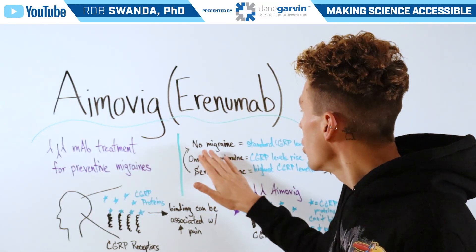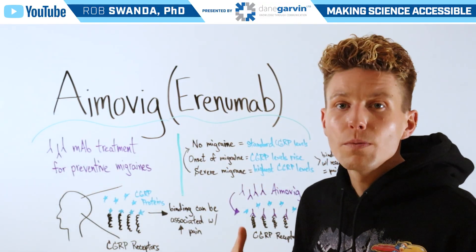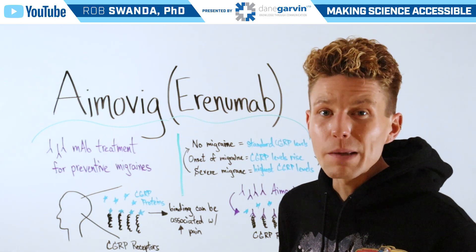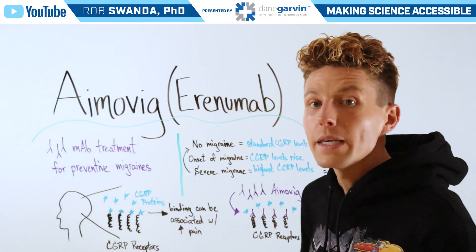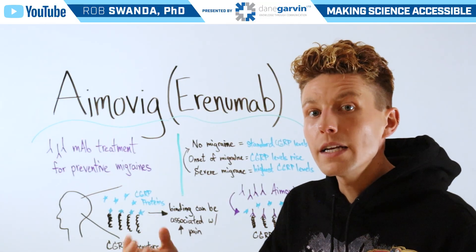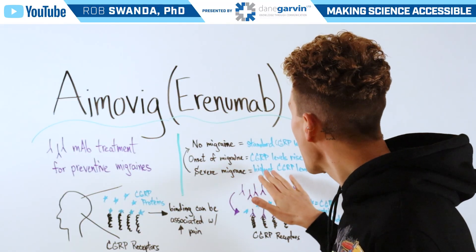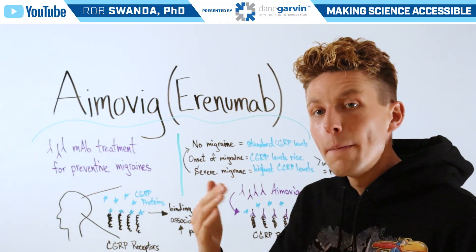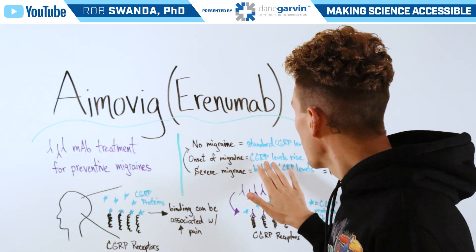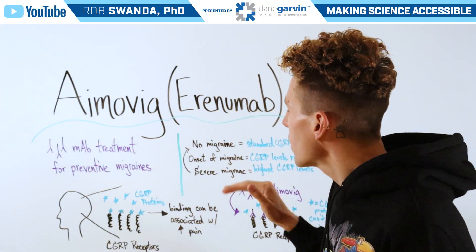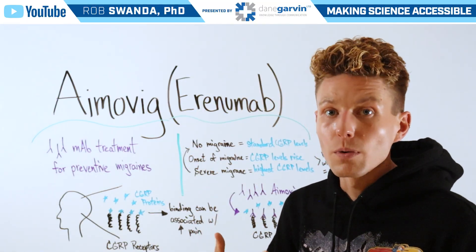You can think of it like this: with no migraines, there's just going to be a standard amount of CGRP levels, so an individual might not be feeling any pain. However, on the onset of a migraine, CGRP levels begin to rise and there's more binding of that protein to the receptor. Then with a severe migraine, the highest CGRP levels bind with the receptor, leading to the most amount of pain. However, those proteins can dissociate from the receptor, leading back to no pain or no migraine.